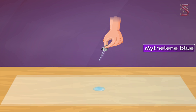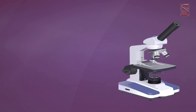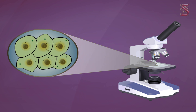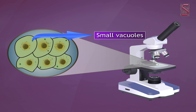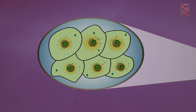Spread the collected saliva in a drop of water on a glass slide. Add a drop of methylene blue and place a cover slip on it. Observing the cells under the microscope, you can see that these are irregular in shape as they do not contain cell walls. They also have a nucleus and small vacuoles to store nutrients and collect waste products.